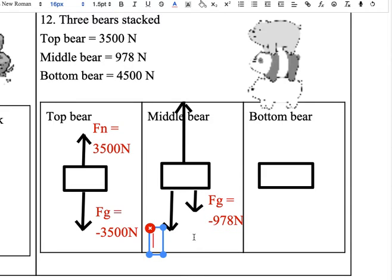Middle bear also is supporting top bear who weighs 3500 newtons, so that means that middle bear has a push force equal to negative 3500 newtons. So if middle bear has a gravity force and a push force equal to those, then it's going to have a normal force equal to the sum of those.